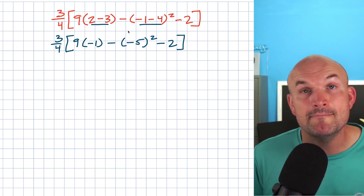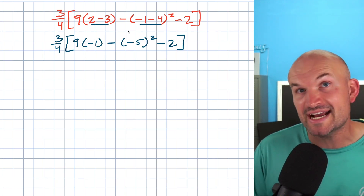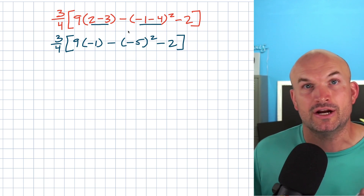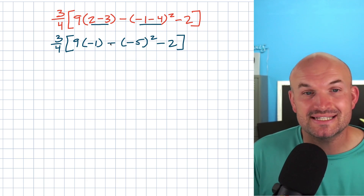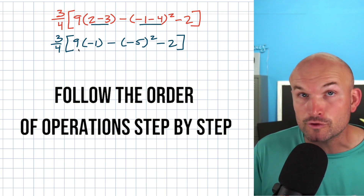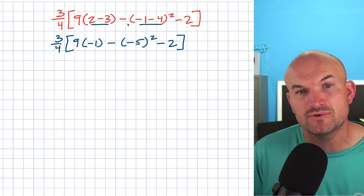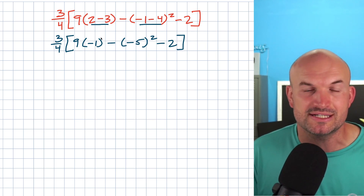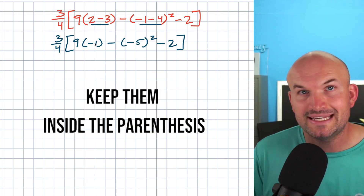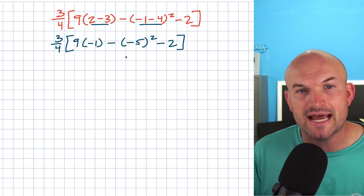Because what I see students trying to do is simplify multiple steps within a problem. And they usually make mistakes because they go outside the order of operations or they just make a mental error. So my best tip is to follow the order of operations step by step, and for each step go ahead and write a new line. The first line we did was our innermost parentheses. Whenever you're simplifying inside the parentheses, keep them inside their grouping symbol until you apply an operation that's going to get rid of them.